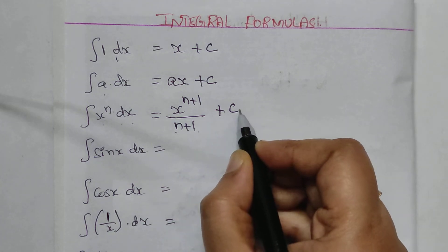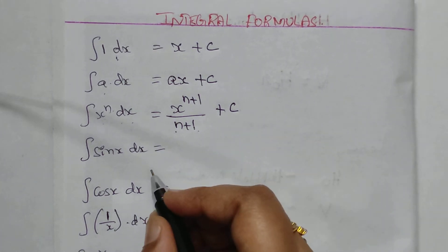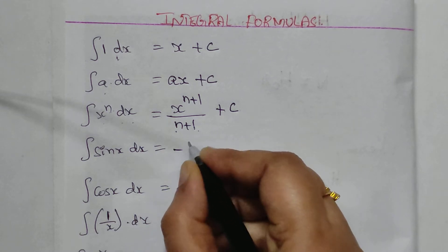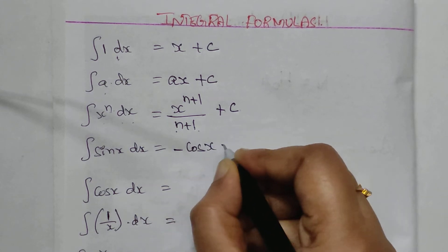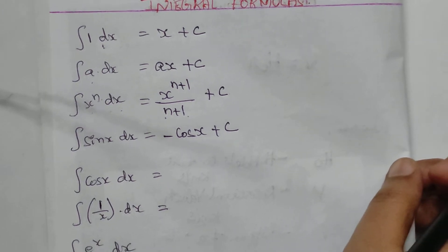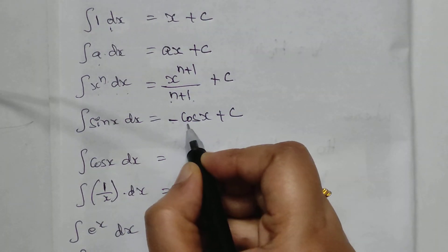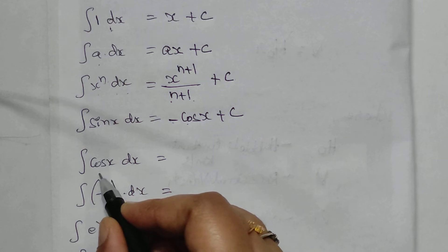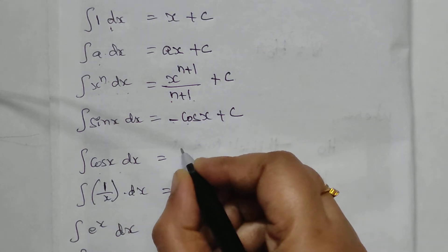Next, the integral of sin x is minus cos x plus C. So when we integrate sin x, the value we get is minus cos x.